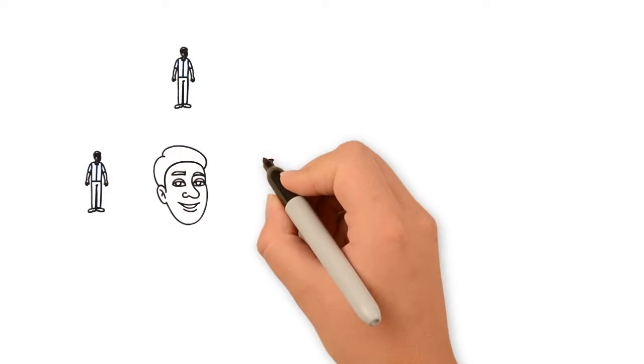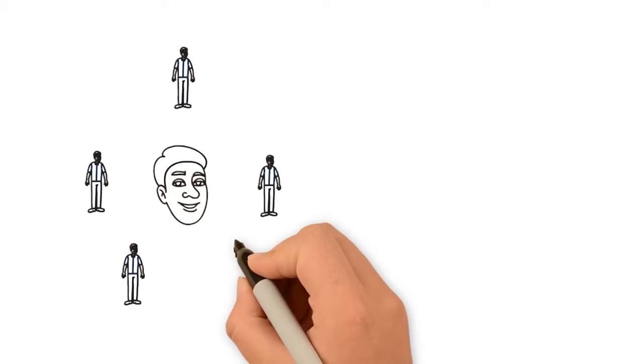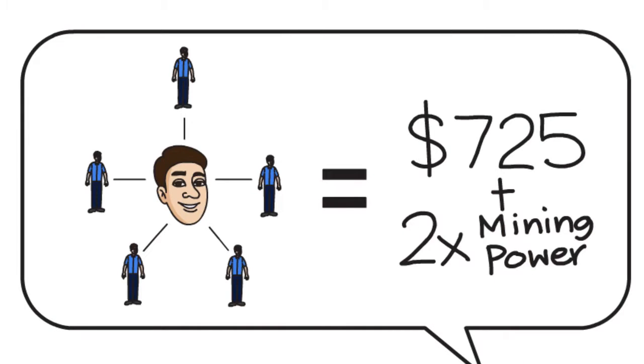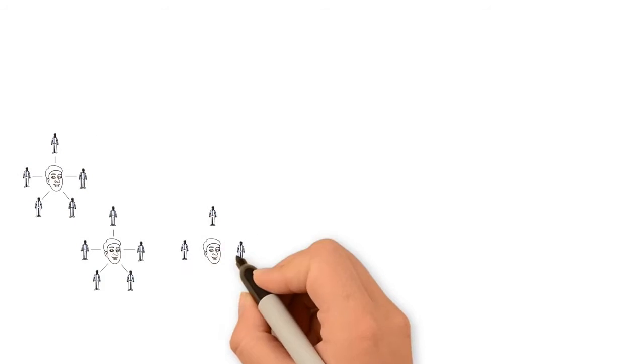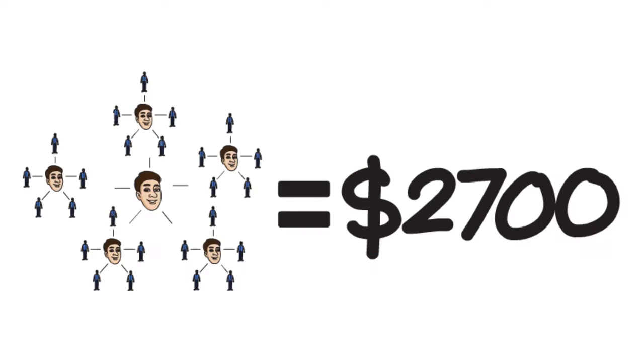Oscar explained that if he shared the gold pack with five more people, he would make $725 and double his mining power. This would increase his daily return, and if those five people shared it with a further five people, he would make another $2,700 and so on.